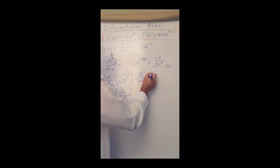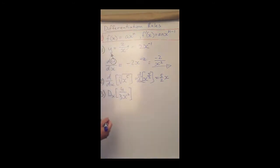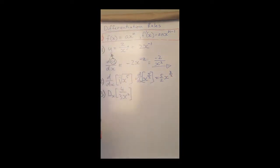1 times 5 over 2 gives me 5 over 2, x to the power of - now I just need to subtract 1 from 5 over 2, and that is equal to 3 over 2. That is my answer.